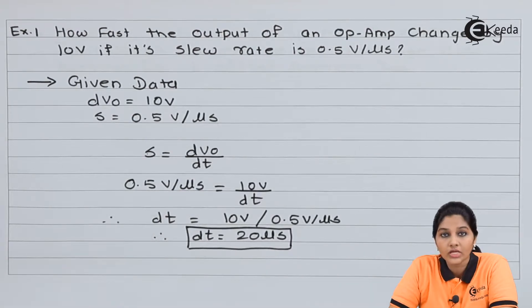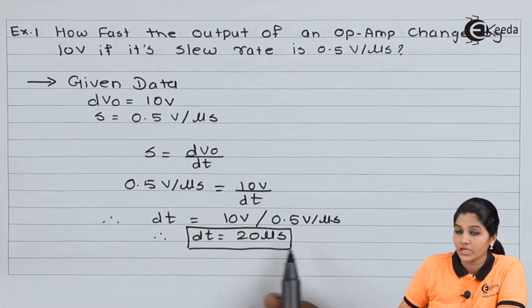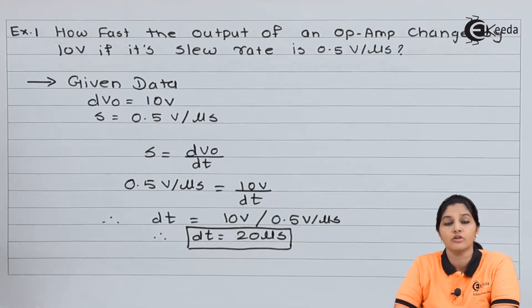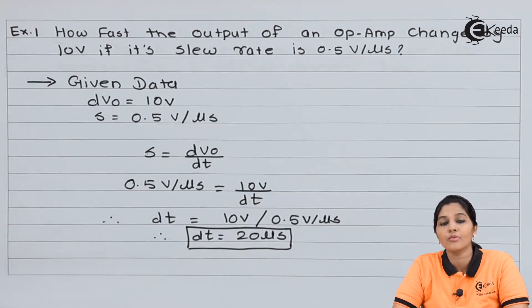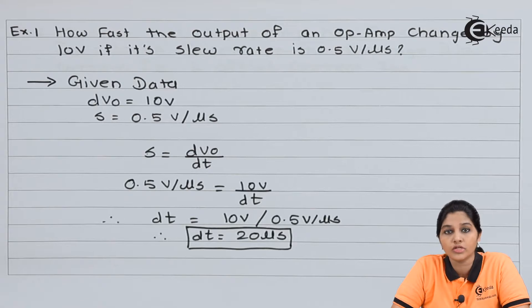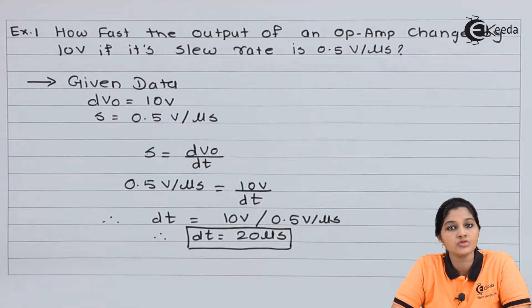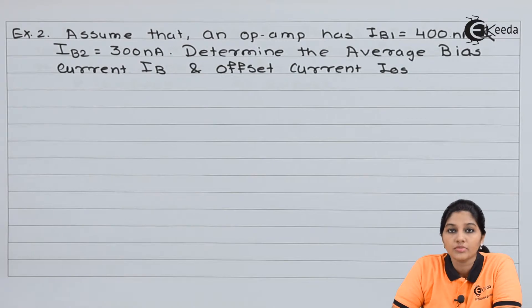From the calculation we get the value of time as 20 microseconds. So this is how, based on the value of slew rate and output voltage, we can calculate the time period. Now let's move to the next problem.